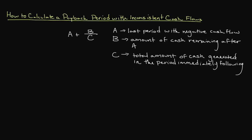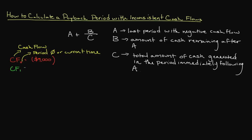Let's assume that we'll be investing $9,000 in a project. This is our investment, so we include the $9,000 in parentheses, which represents a negative figure or cash outflow. The abbreviation CF stands for cash flow and the subscript zero indicates the period, representing the present time. We project to receive positive cash flows of $2,000, $2,500, $3,750, and $4,500 in periods one through four respectively.